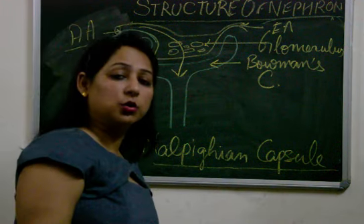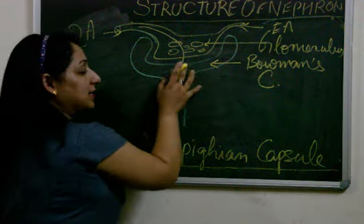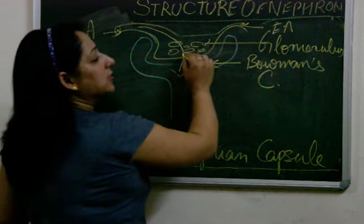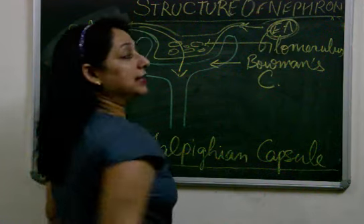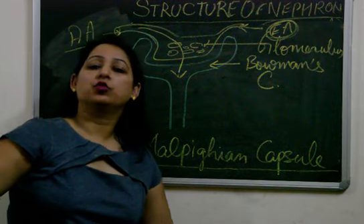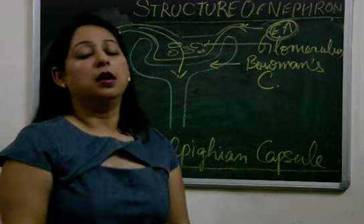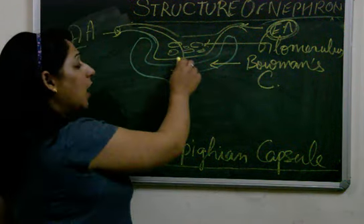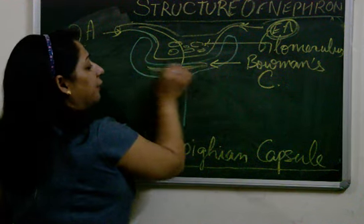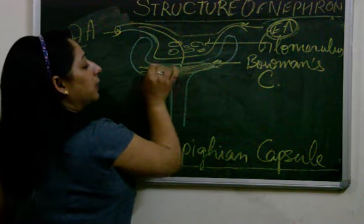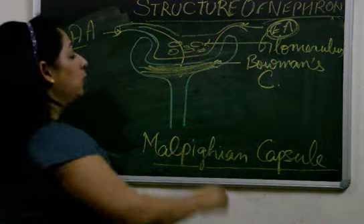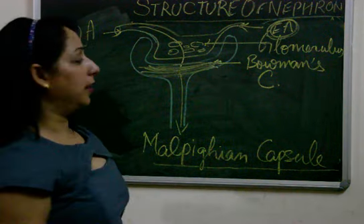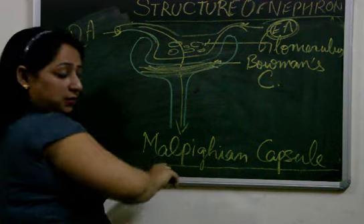It is filtered to such an extent that all the useful and harmful substances get filtered in malpighian capsule. Thick blood remains in glomerulus which finally moves to efferent arteriole and is passed to vasa recta, parallel to the nephron. This we have already done in the last video. Now this filtrate will settle down in Bowman's capsule and will be passed into the next part, PCT.